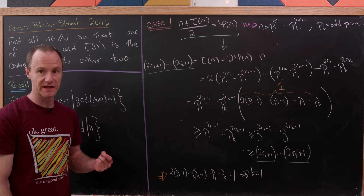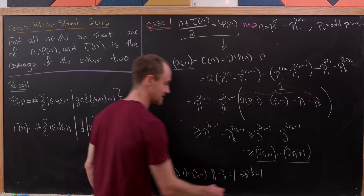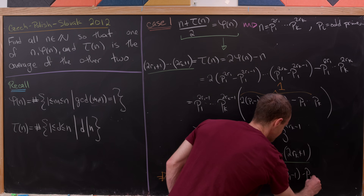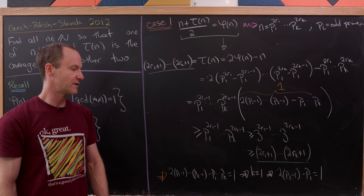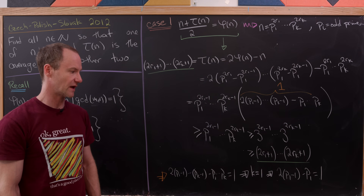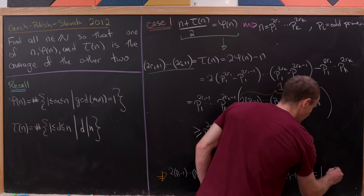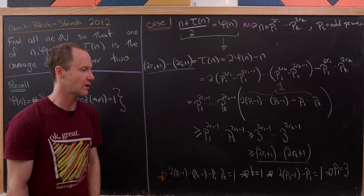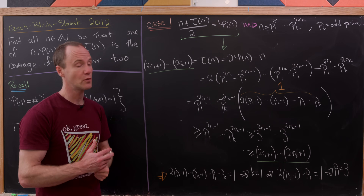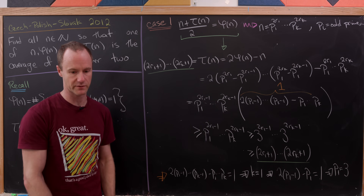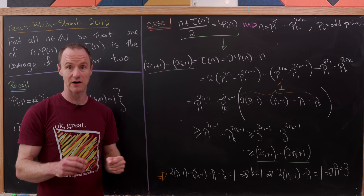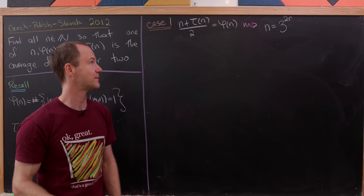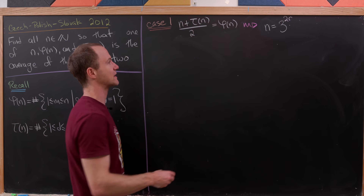That means 2(p₁−1)···(pₖ−1) − p₁···pₖ = 1, which — by distributing — holds only when k = 1. Substituting k = 1 gives 2(p₁−1) − p₁ = 1, which solves to p₁ = 3. So in this case n must be an even power of 3. Now let's determine exactly which even power.